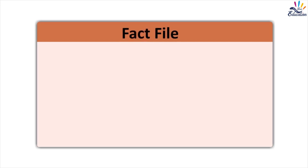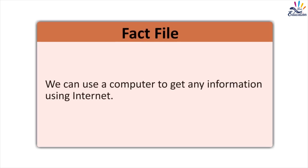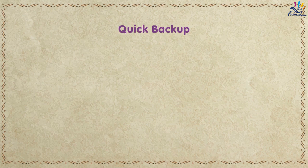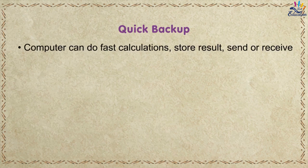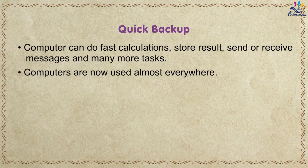Fact file: We can use a computer to get any information using the Internet. Quick Backup: Computers can do fast calculations, store results, send or receive messages, and many more tasks.